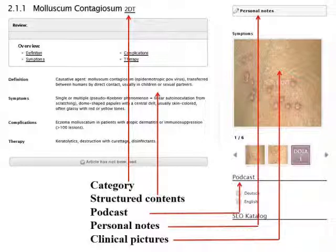A 3–5 minute podcast gives a brief overview of the topic. The symptoms are depicted as clinical pictures, which can be magnified. You can add personal notes in the respective fields. These notes can only be seen by you if you have personally registered using AAI, or your username and password.